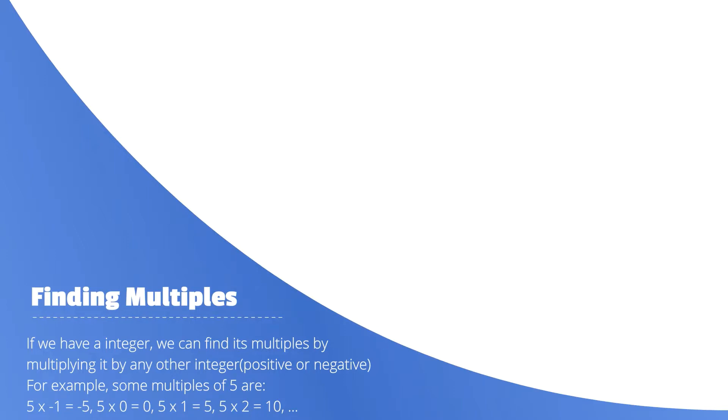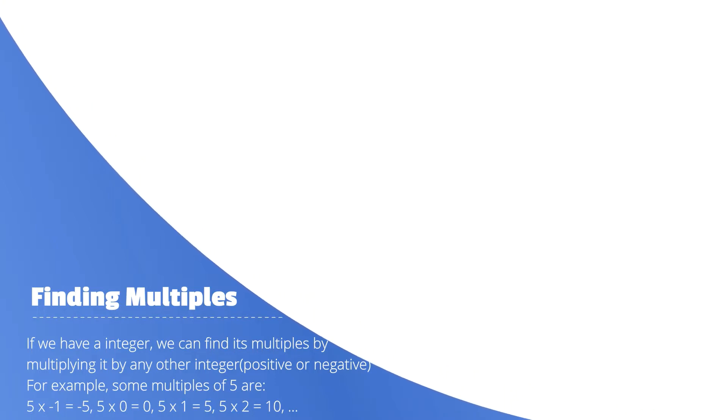For example, some multiples of 5 are 5 times 1 equals 5, 5 times negative 1 equals negative 5, 5 times 0 equals 0, and 5 times 2 equals 10.